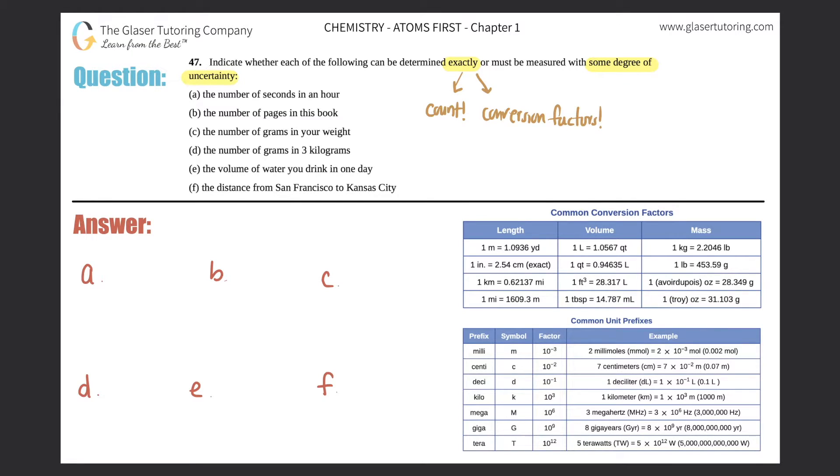Also, exact numbers come from conversion factors. If you can use a conversion factor, these numbers to convert one unit to another, you can do that exactly because we know the exact amount from one unit to another. However, if we cannot count and we cannot use a conversion factor, then it's a degree of uncertainty. We can find out something by being a little bit unsure about something, which is okay, we just won't know exactly.